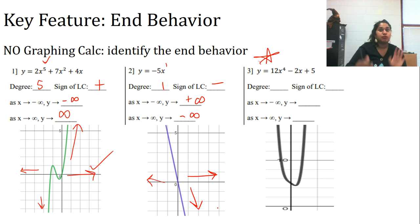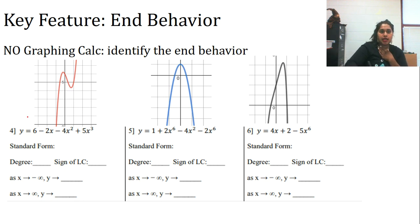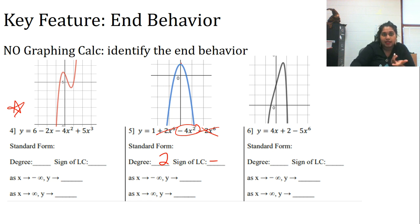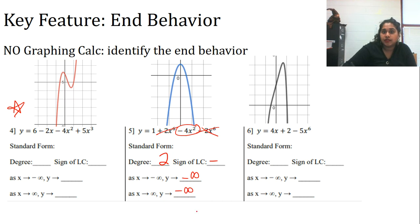Try number 3 yourself. For number 5: the x² terms actually cancel each other out, so the largest remaining degree is 2 with a negative leading coefficient. As x → -∞, y → -∞, and as x → +∞, y → -∞. For number 6: degree is 6, sign is negative, so both ends head down.